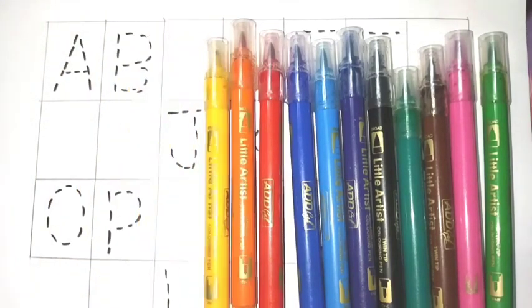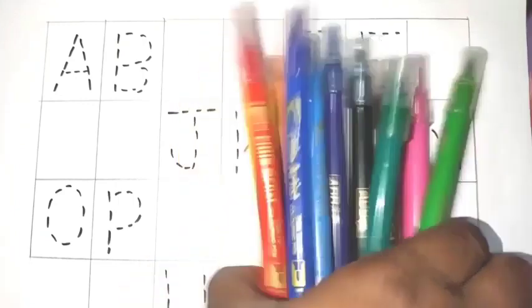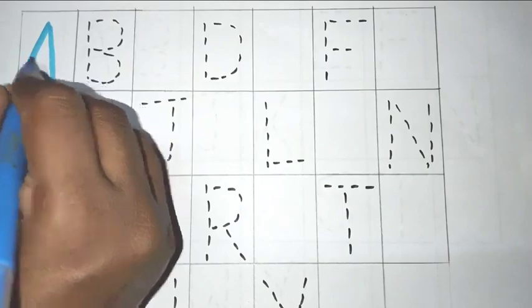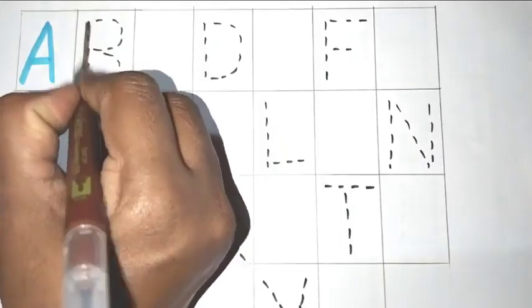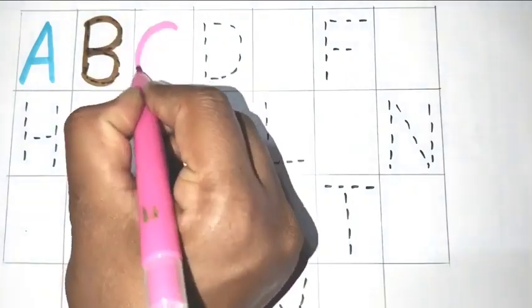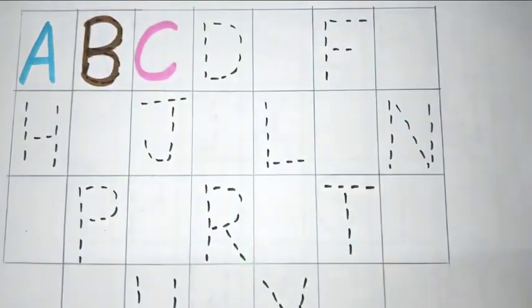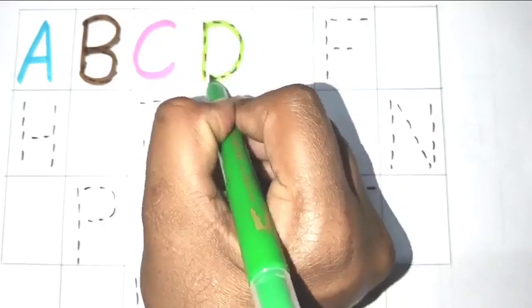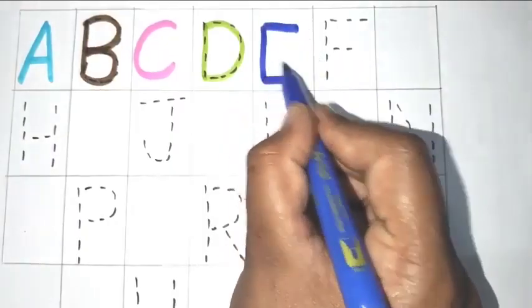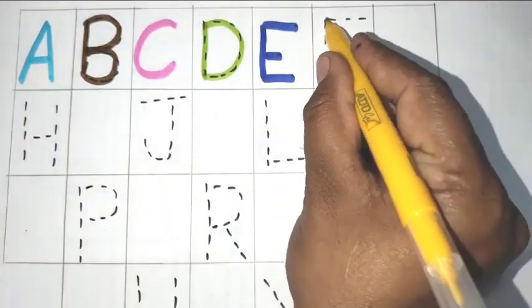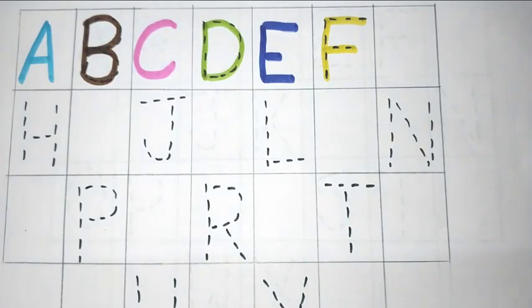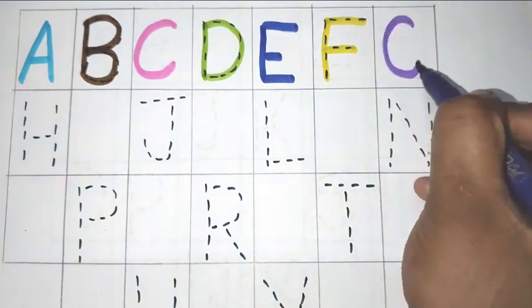A for apple, B, B for ball, C, C for cat, D, D for dog, E, E for elephant, F, F for fish, G, G for giraffe.